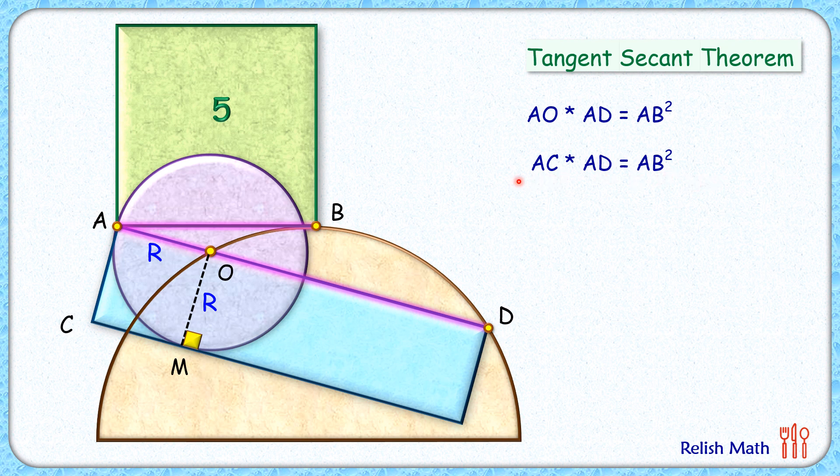Now if we look carefully, AC times AD, that's what the area of blue rectangle. AB square is what, is the area of this green square. And thus area of blue rectangle is nothing but 5 centimeter square, and that's our answer.